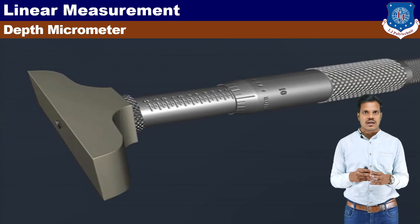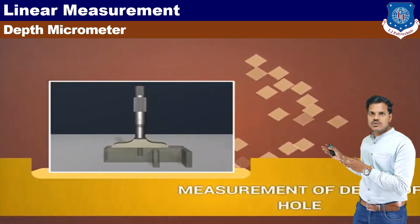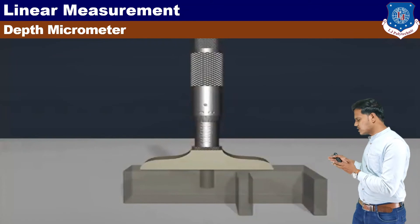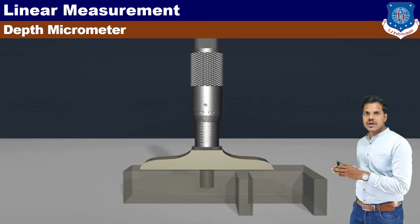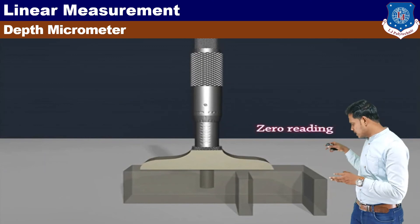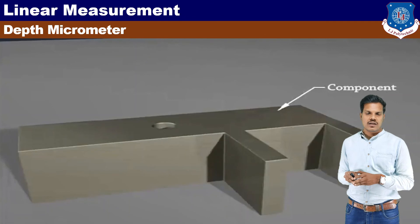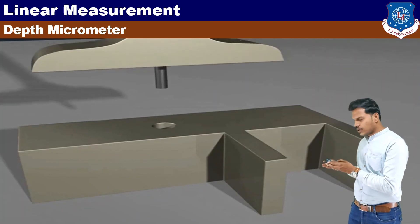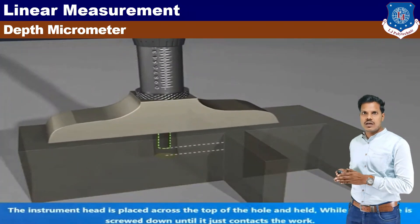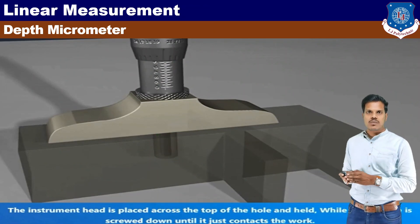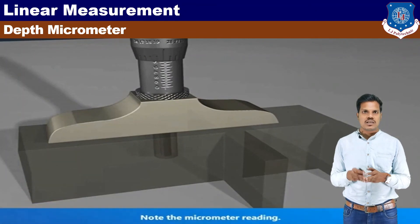The depth micrometer has a least count of 0.01 mm. For a specific object with a hole, we place the base on it, then rotate the thimble slowly so the spindle goes into the hole. We rotate the thimble until the spindle touches the bottom and does not move the base. When it is touched, we calculate the reading, which is the same as the outside micrometer. This is how we perform depth measurement.